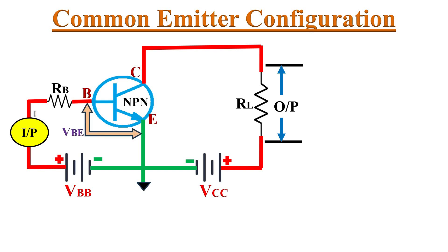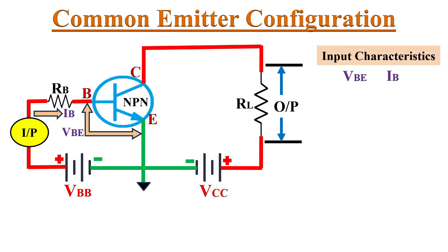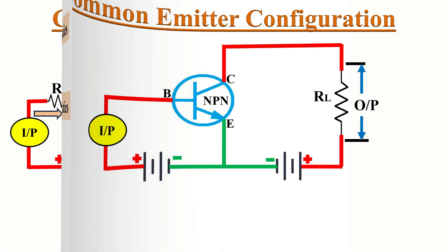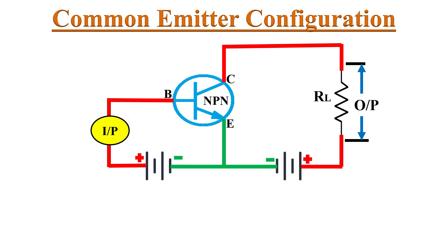The energy supplied by the DC supply is used to amplify the input signal. The voltage VBE and base current IB are the input characteristics, while the voltage VCE and collector current IC are the output characteristics. After biasing, the BJT will be in the active region.